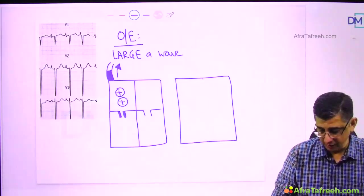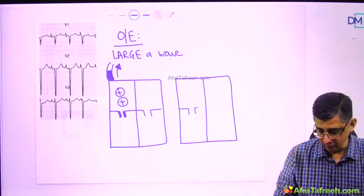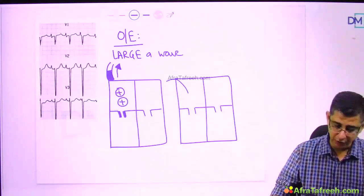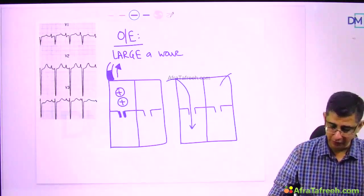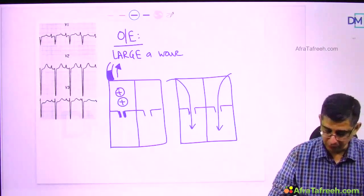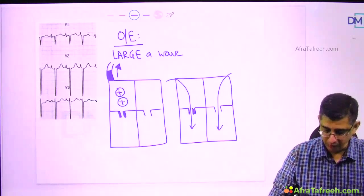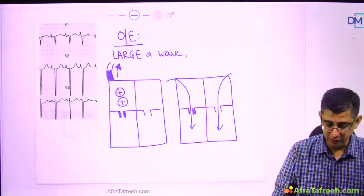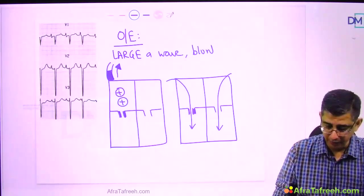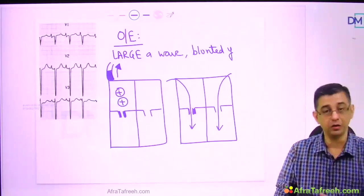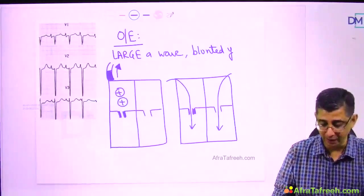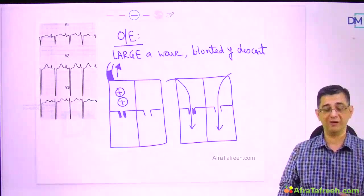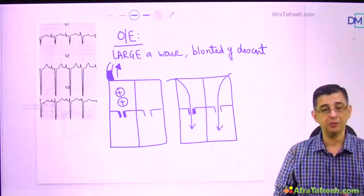The 'y' descent is related to relaxation of the heart during rapid ventricular filling. In a normal diagram, ventricular filling is rapid, but if the tricuspid orifice is relatively narrow, filling will be relatively slower. Therefore these patients show a blunted 'y' descent — not a steep 'y' descent. Mark the word: blunted 'y' descent is the feature seen in tricuspid stenosis.